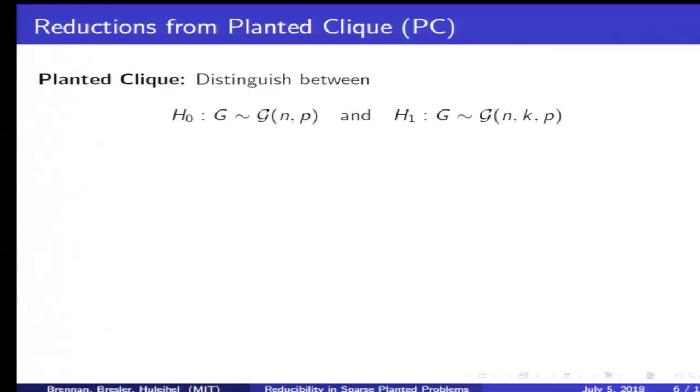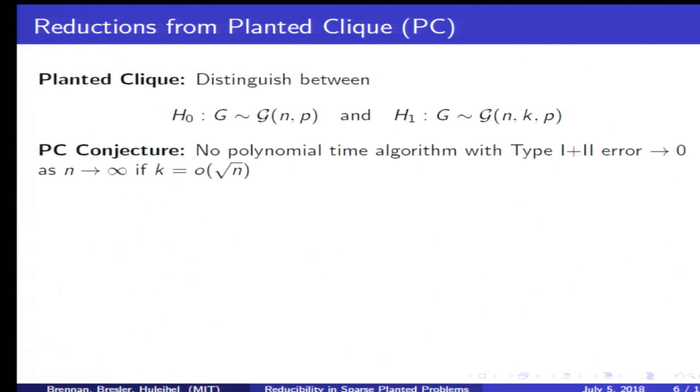Following a recent line of work in average case reductions, our starting point for the web of average case reductions that we're going to try to build here is planted clique. The goal is to build a web of average case reductions to relate statistical computational gaps across different problems. The starting point is planted clique, which is to distinguish between two hypotheses. First, that G is drawn from an Erdos-Renyi random graph, or second, that it's drawn from an Erdos-Renyi random graph with a k clique planted uniformly at random. A long line of algorithmic work all stops at the barrier of k equals square root of n, so there's this long-standing conjecture that there's no polynomial time algorithm to solve planted clique if k is much smaller than square root of n.